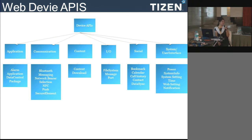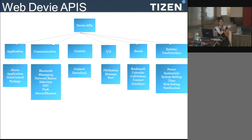The push API handles updates for your OS or application. The content module lists directories containing images, videos, and other content-related files. The download module lets you control downloads and check download status using download APIs.